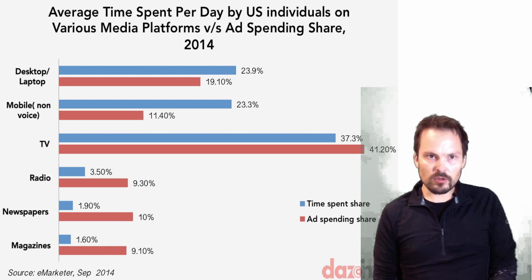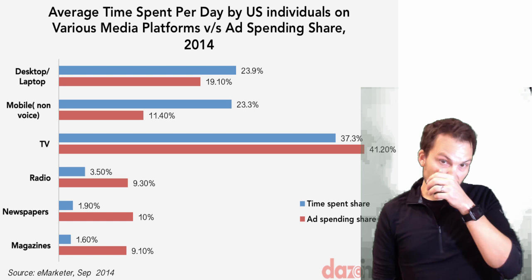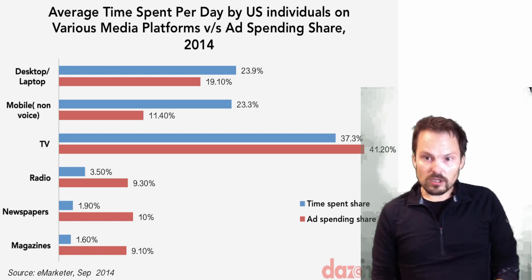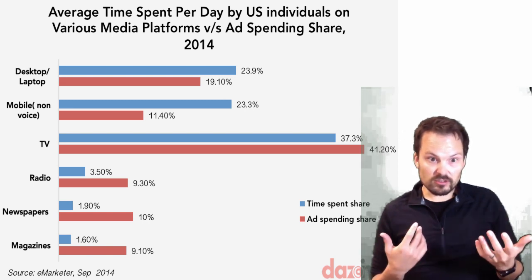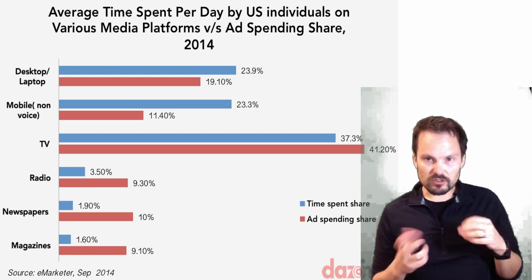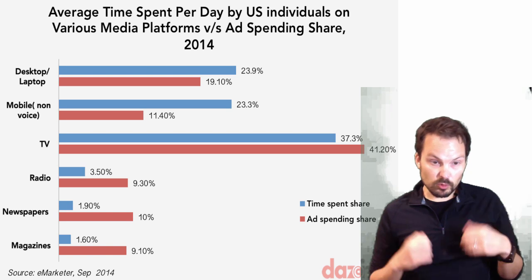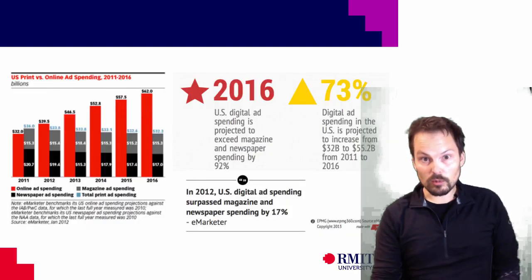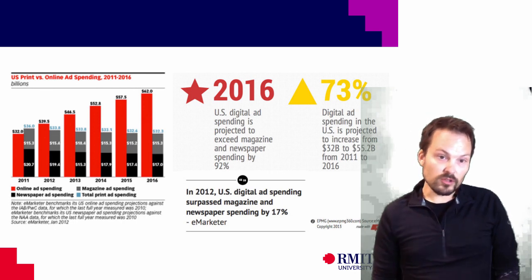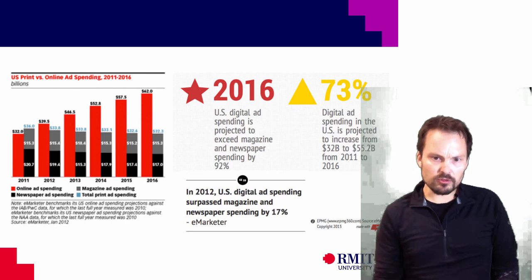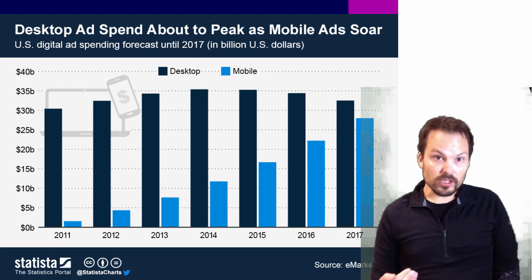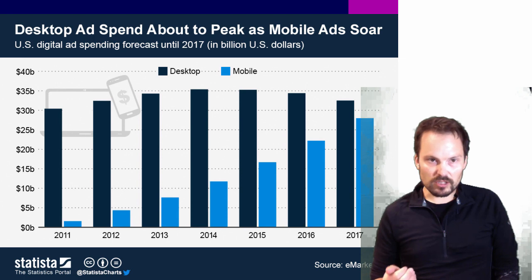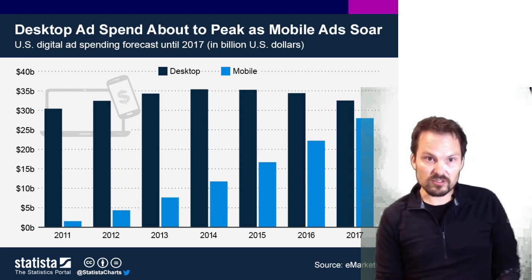Looking at some statistics about how the landscape is changing — you can also look at the latest census report for Australian data. What we still see is an overspending on traditional sources such as radio, television, and magazines, even though media consumption is shifting toward digital. We also see the growing recognition of mobile as a very important part of businesses' ad spending.